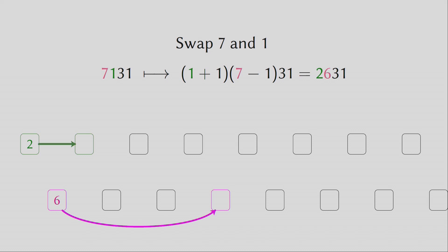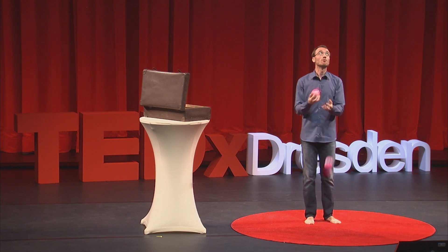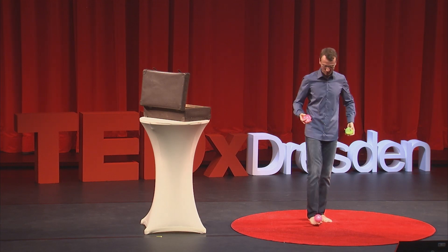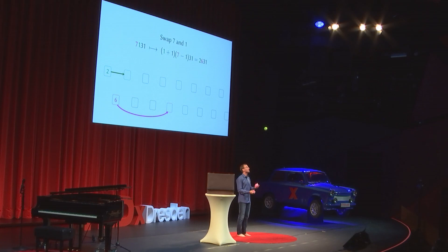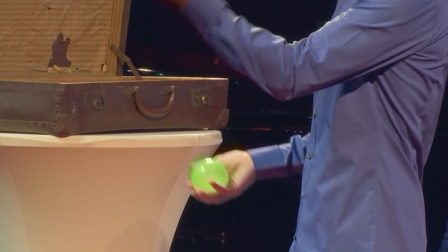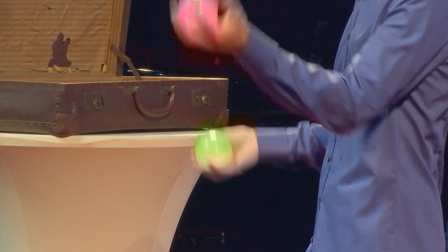Now we throw the red ball one beat later, so it has to spend one beat less time in the air to land on the same beat. Before we threw it with a seven — now we throw it with a six. So the red seven becomes a red six. And the green ball we throw one beat earlier, so it has to spend one beat longer in the air — the green one becomes a green two. So the new siteswap is two, six, three, one, which looks like this.